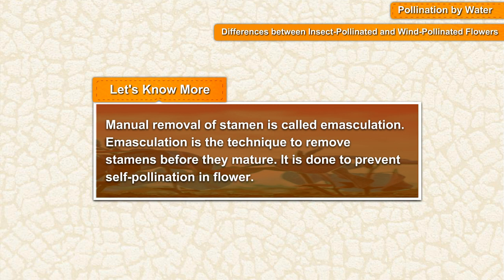Manual removal of stamen is called emasculation. Emasculation is the technique to remove stamen before they mature. It is done to prevent self-pollination in a flower. See you next time, everybody.